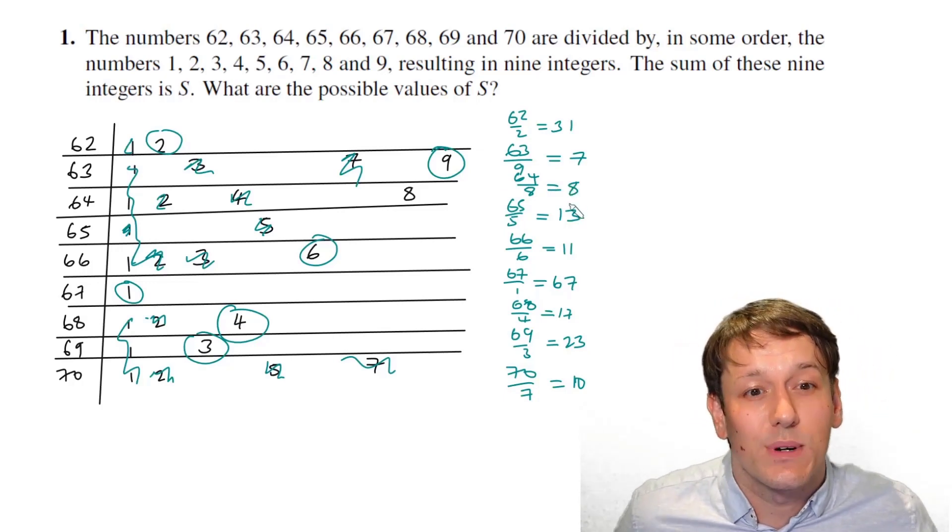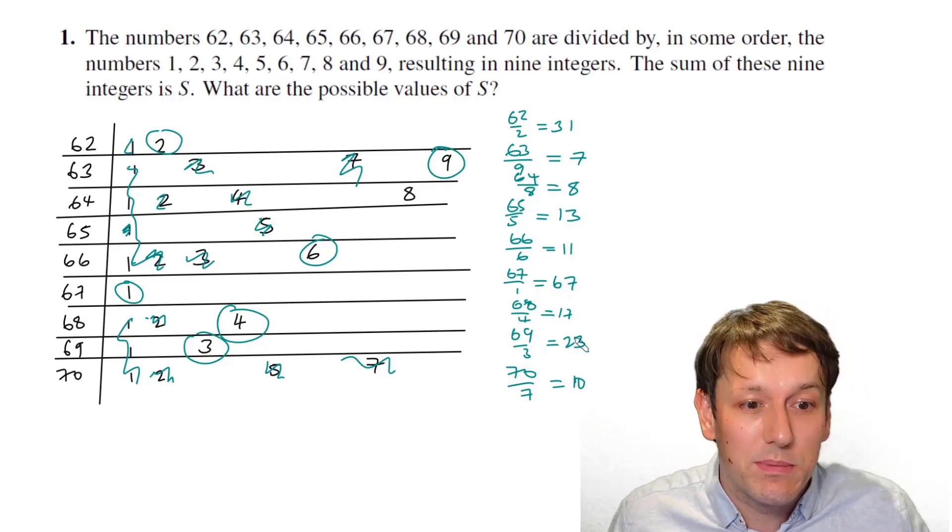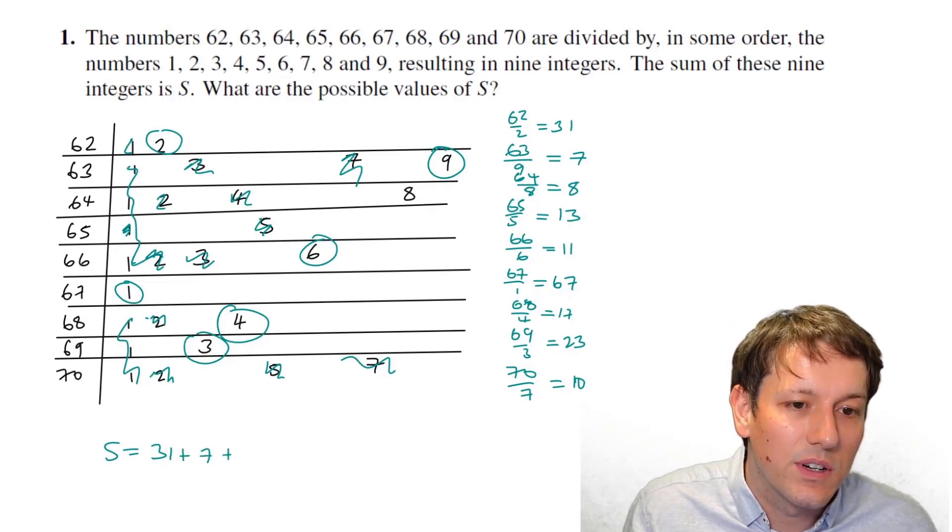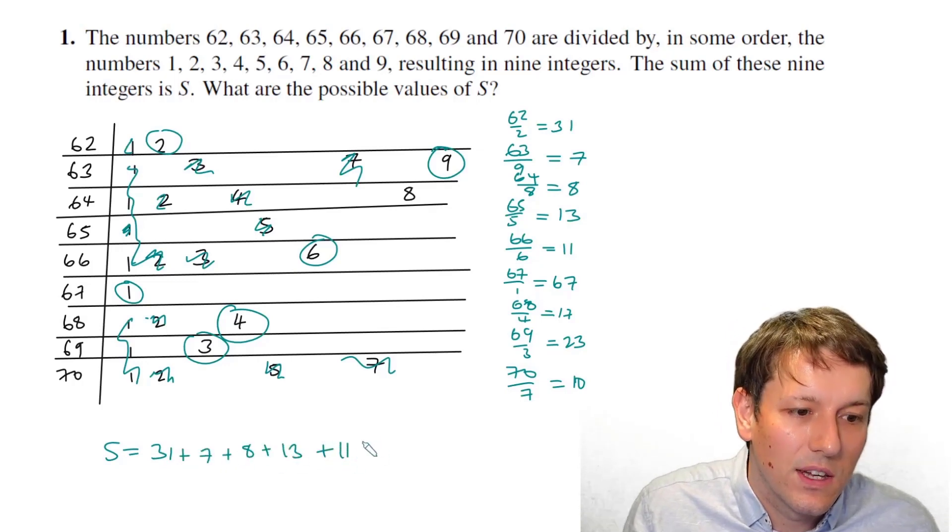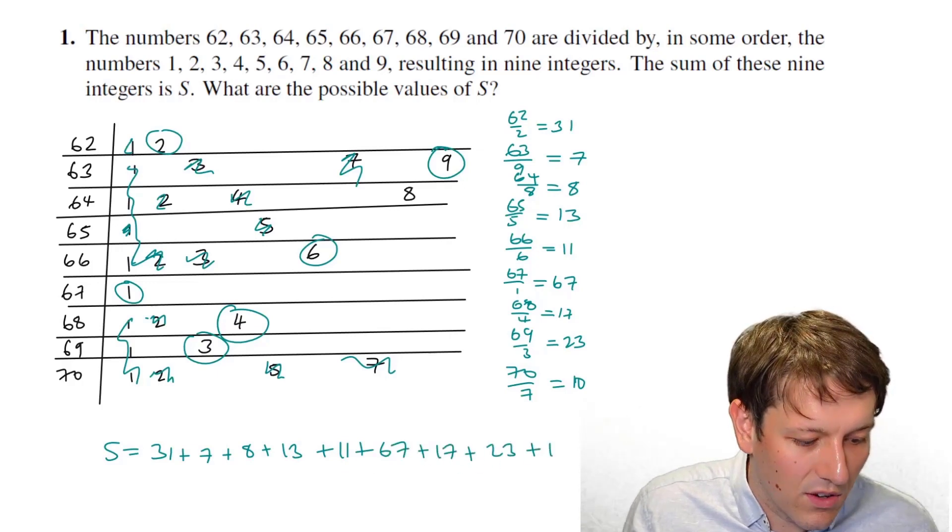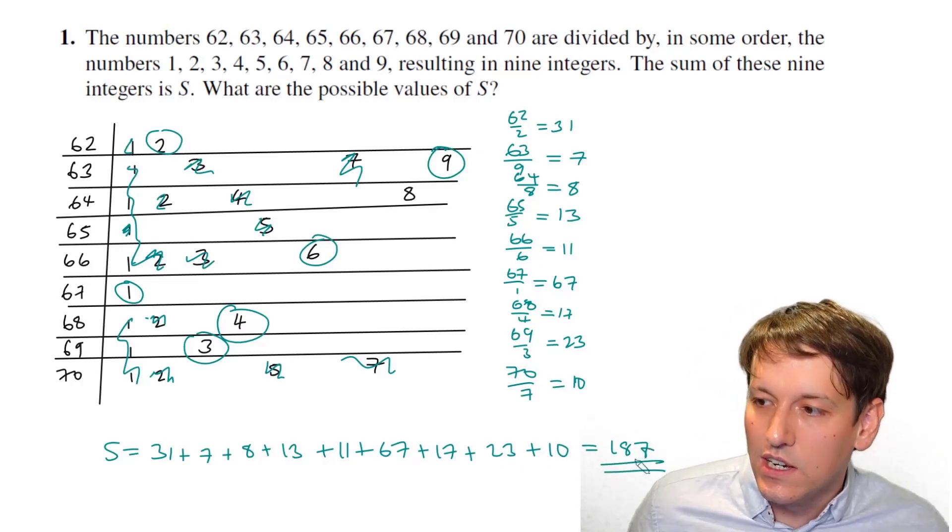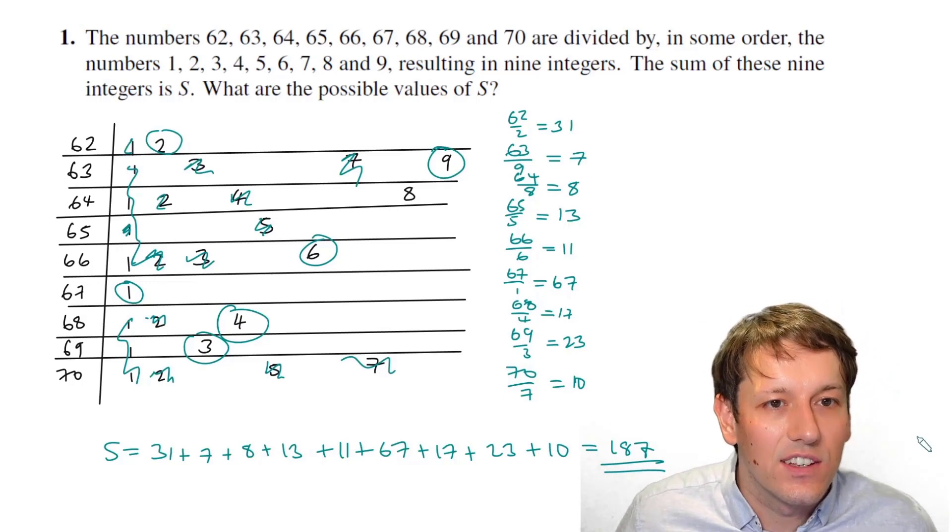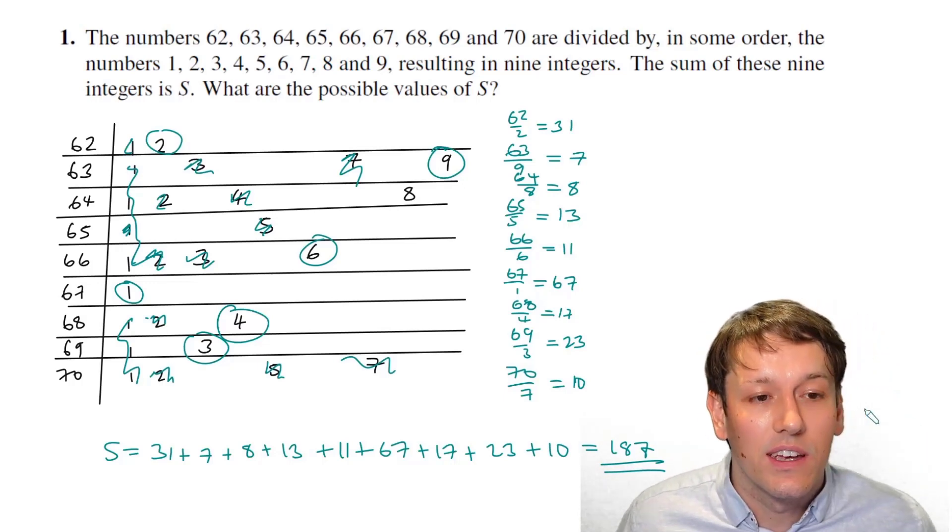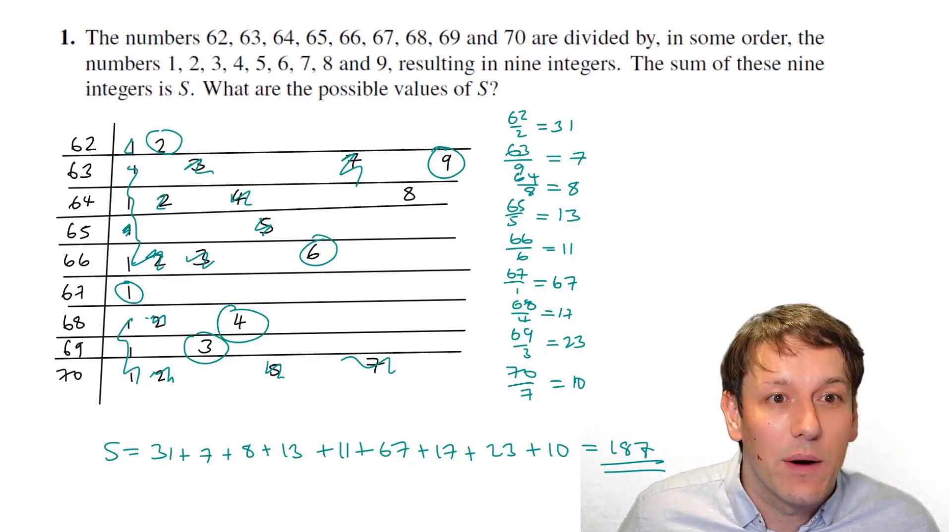So different ways of narrowing down the logic here, but we've basically got the answer here, and actually what we found is there is only one possible value of S, right? And so S is equal to the sum of these numbers, 31 plus 7, plus 8, plus 13, plus 11, plus 67, plus 17, plus 23, plus 10. And if you add all those together, you get 187. And so in a sense, that's the answer. But of course, we still have to add to this now some written working to make sure that we really go back through that logic and explain how we worked all of that out.